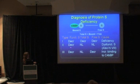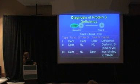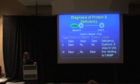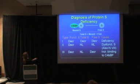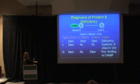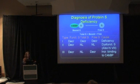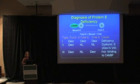Type 3 protein S deficiency is where you have decreased functional and decreased free with normal total protein S. That's essentially the protein S going in this direction — most of it bound to C4B binding protein. That can be due to a mutation that gives you increased binding to C4B binding protein, or an acute phase response that actually increases your C4B binding protein level.